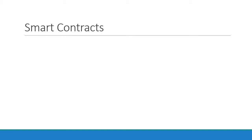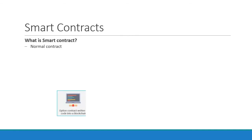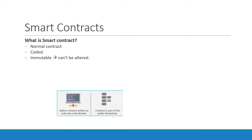What makes blockchain more powerful is the use of smart contracts. So what is the smart contract? It's a normal contract but running on a blockchain where the rules and agreement between two parties are coded and immutable — therefore, can't be altered nor modified. Moreover, the parties involved in a contract are anonymous.